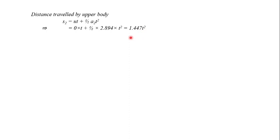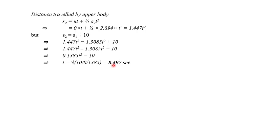But s2 equals s1 plus 10. Substituting s1 value here, 1.447 t squared equals 1.3085 t squared plus 10. Then t is the only unknown value. Finally, we will get t to be 8.497 seconds.